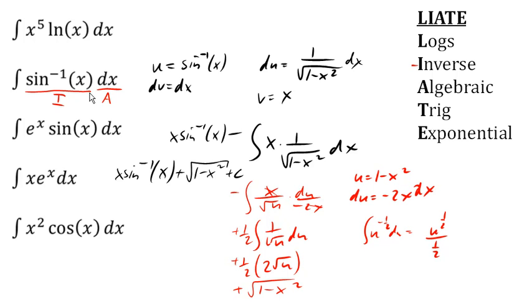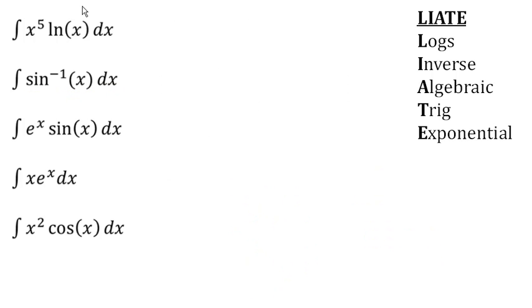So here, we have e to the x, which is exponential, and sine, which is trig. Since trig shows up first on the list, we'll let u equal sine x, and dv equal e to the x dx.